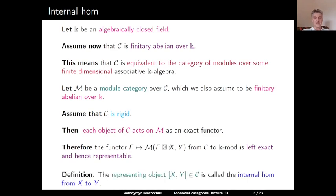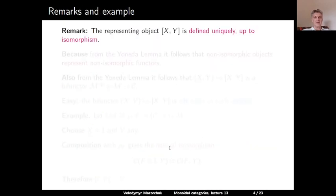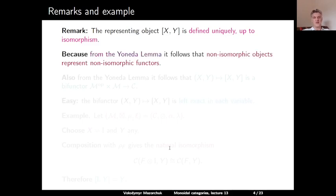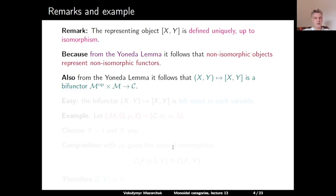Definition: the representing object, which we denote by [X, Y] in C, is called the internal hom from X to Y. Remark: the representing object is defined uniquely up to isomorphism by the Yoneda lemma. Also, the assignment which takes the pair (X, Y) and sends it to the internal hom [X, Y] is a bifunctor from M^op × M to C — contravariant in the first argument, covariant in the second — and it is left exact in each variable.